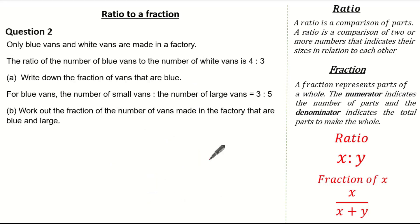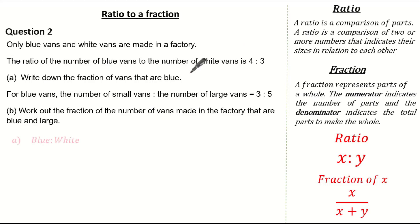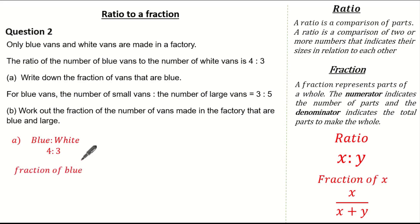Looking at another question: only blue vans and white vans are made in a factory. The ratio of the number of blue vans to white vans is four to three. We are asked to write down the fraction of vans that are blue. The ratio of blue to white is four to three, so blue is four parts out of a total of seven parts — therefore four sevenths are blue.